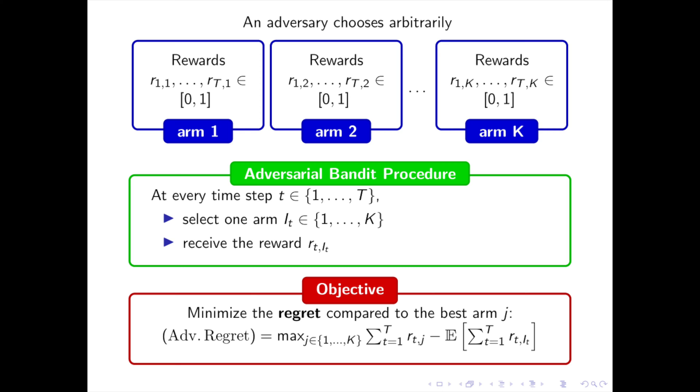In the adversarial setting, the rewards r_{t,j} are deterministic, so the expectation only applies to your arm selection strategy i_t, which may be random. The adversarial setting is less advantageous for us than the stochastic setting, because the rewards can be anything. In the adversarial setting, the best possible regret is of the order of √T, instead of the more advantageous log T for the stochastic setting.